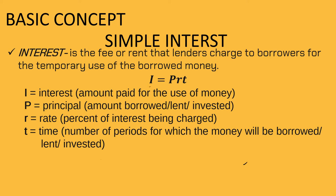The formula that we will use is I is equal to P times R times T, wherein I means interest, which is the amount paid for the use of money. P is the principal, which is the amount borrowed, lent, or invested. R, which is the rate, is the percent of interest being charged. Usually, it is written in percentage, but we need to convert it into decimal.